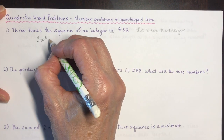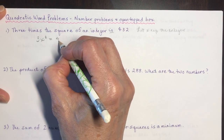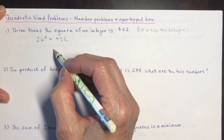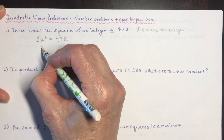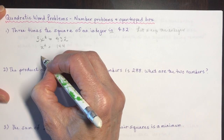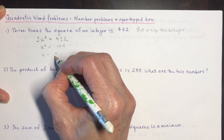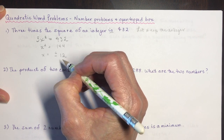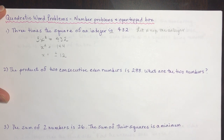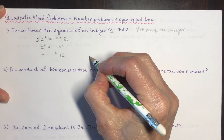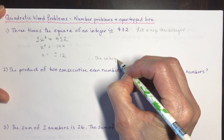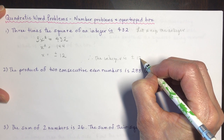When you see 'is,' that's your equal sign — is 432. Divide by 3 and you get 144, so x equals plus or minus 12. Remember that negative 12 squared is also 144, as is 12 squared. Therefore the integer is plus or minus 12.